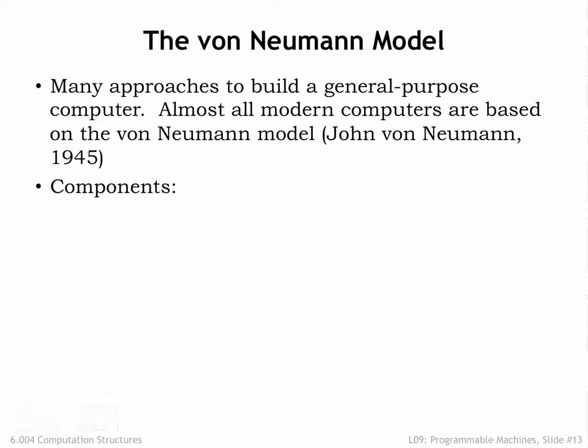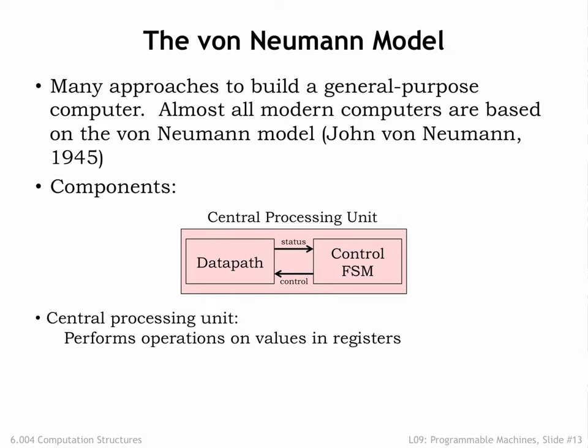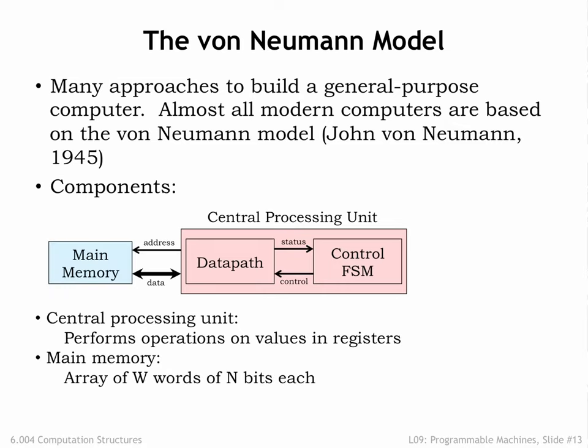The von Neumann model has three components. There's a central processing unit, also known as the CPU, that contains the data path and control FSM as described previously. The CPU is connected to a read-write memory that holds some number W of words, each with N bits. Nowadays, even small memories have a billion words, and the width of each location is at least 32 bits, usually more. This memory is often referred to as main memory to distinguish it from other memories in the system.